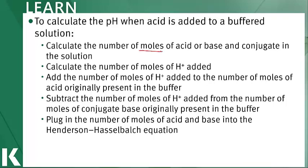Once we do that, we look at the concentration of the acid that is added and figure out the number of moles of protons or acid equivalents that are added. Once we know the number of moles of acid that are added, we will add that number to the number of moles of protons that are in the buffered solution. Next, we will subtract the number of moles of protons we're adding from the number of moles of conjugate base that were originally in the solution. Once we know the number of moles of acid equivalents and the number of moles of conjugate base, we will plug this into the Henderson-Hasselbalch equation.